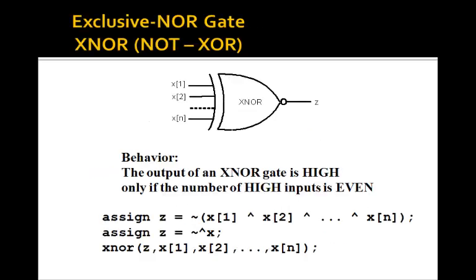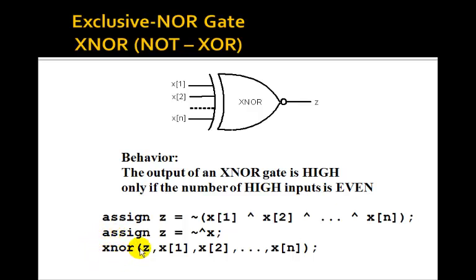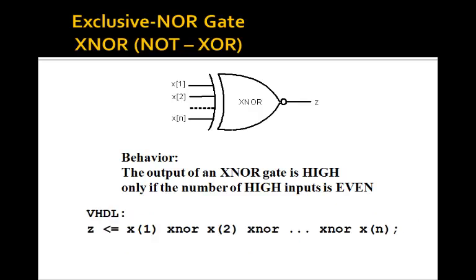A multiple-input XNOR gate has its output high only if the number of high inputs is even, since it's just a NOT exclusive OR. In Verilog, you write it using a NOT and the hat operator, or the NOT-hat as a reduction operator, or the XNOR gate instantiation statement. In VHDL, use the xNOR word as the operator.